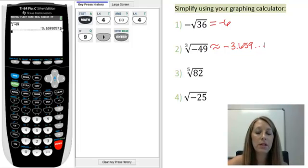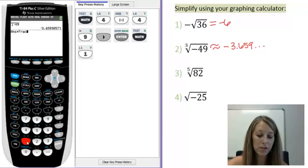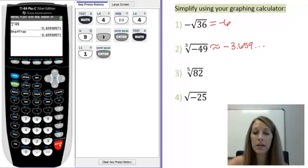An easy way to tell the difference between a rational and irrational number on your calculator is if you try and convert it back to a fraction. Math, option 1 converts it to a fraction and hits enter. Notice that it doesn't convert it back because it is impossible to convert it to a fraction, meaning it is irrational and not rational.